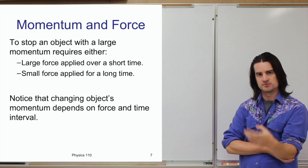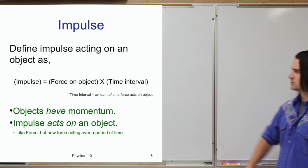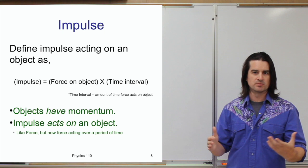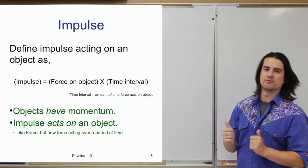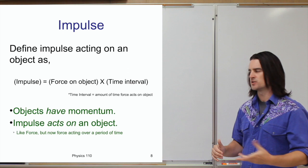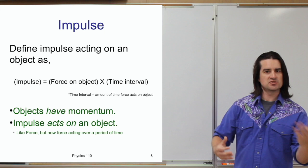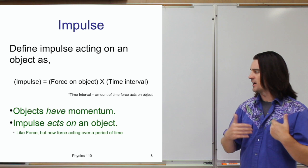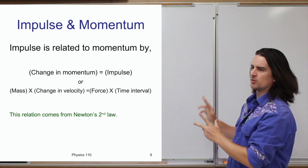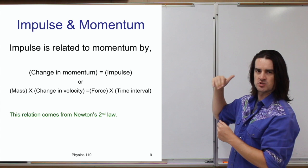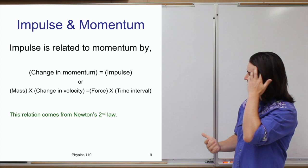Changing momentum requires a force applied over a certain amount of time. Force applied over a certain time is what we call an impulse. An impulse is exactly equal to a force multiplied by the time that force is applied for. Momentum is a quality of an object — something it has because it's in motion. An impulse is more like a force in itself — something that acts on an object; it is basically a force applied over time.